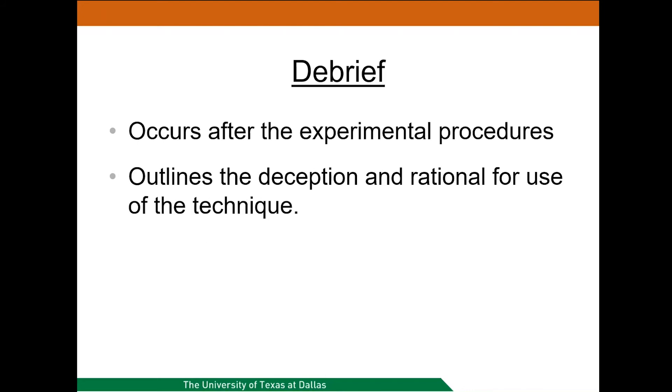When deception or incomplete disclosure is used, the participant is not able to fully consider all the elements of the study and provide completely informed consent at the beginning. This is typically documented in the informed consent process. Therefore, when deception or incomplete disclosure is used, investigators should debrief participants at the end of the study to preserve their autonomy.